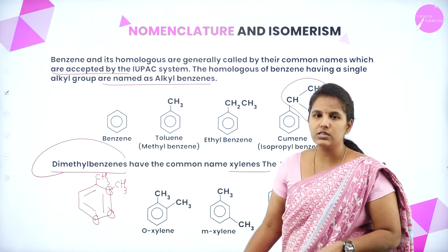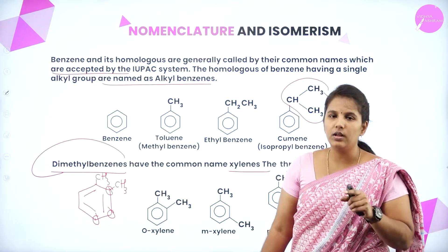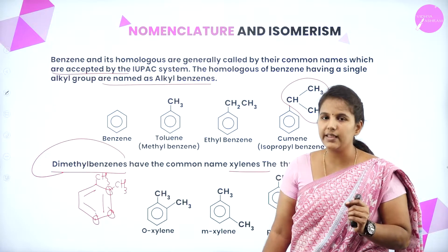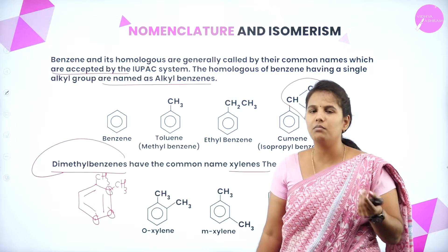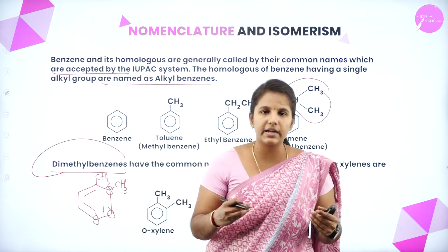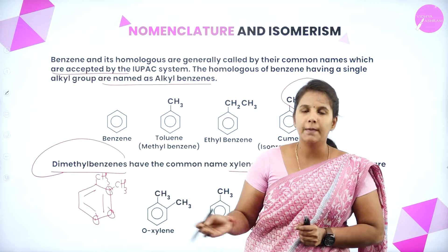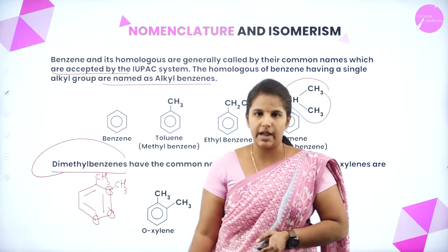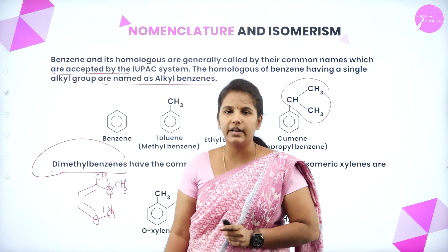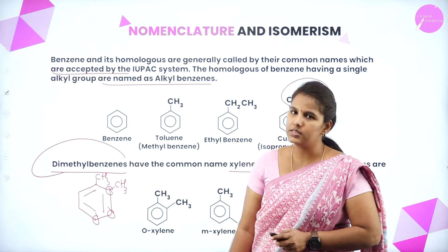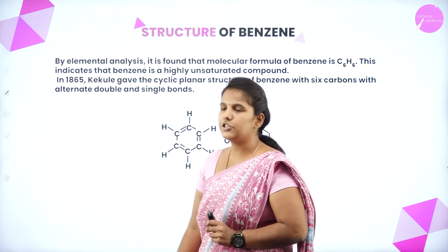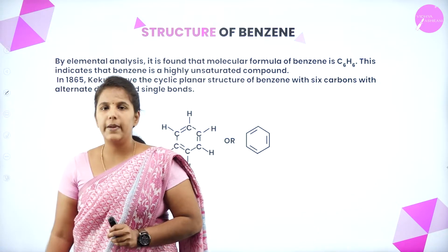So the three isomers are ortho, meta, and para. The methyl groups are present at the ortho, para, and meta positions respectively, hence named ortho-xylene, meta-xylene, and para-xylene. Now let us understand the structure of benzene.